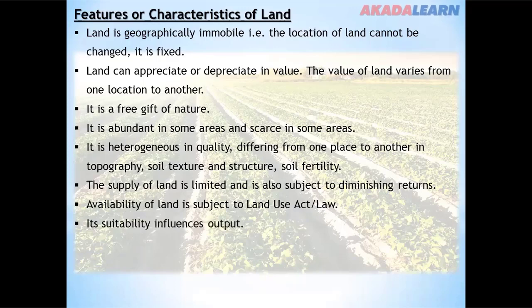The suitability of land influences output. The better a land is for the production of certain crops, the better the output. For example, if you cultivate crops on land with very low nutrient content, the harvest will be poor. Land can also be used as collateral for loans — if a farmer desires to collect a loan from a bank and has enough land, he can use that land as collateral.